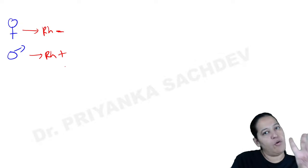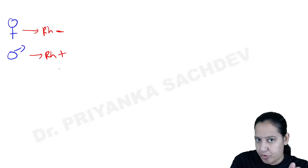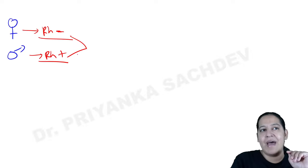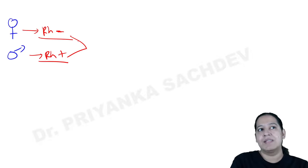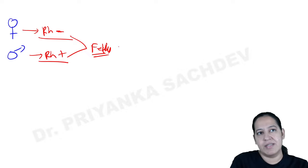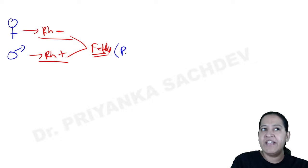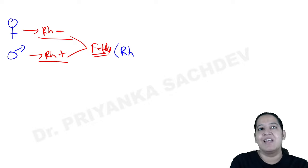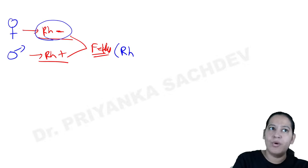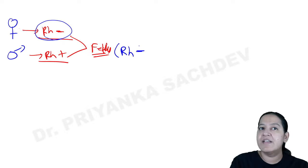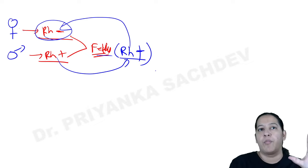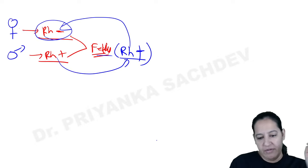The fetus has a 50-50 chance of being Rh positive or negative. If the fetus is Rh positive like the father and is inside an Rh negative mother, there is a problem. The fetus's RBCs contain D antigen (Rh antigen) while the mother's RBCs are D antigen negative. Normal blood flow is from mother to fetus throughout pregnancy, so both Rh positive fetal RBCs and Rh negative maternal RBCs coexist in the fetus.